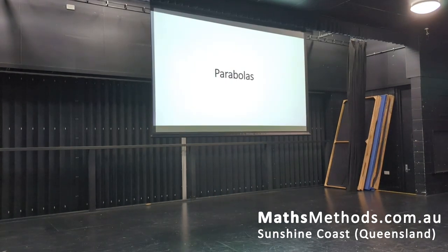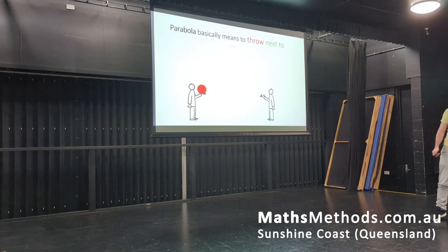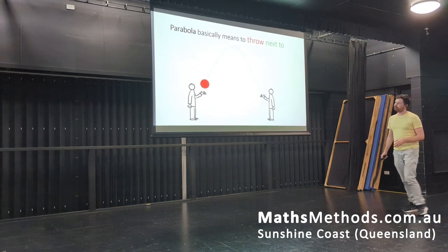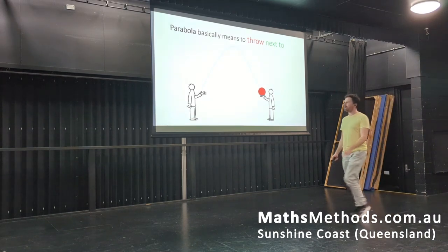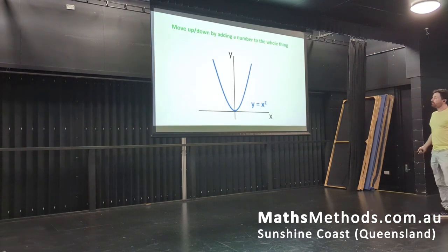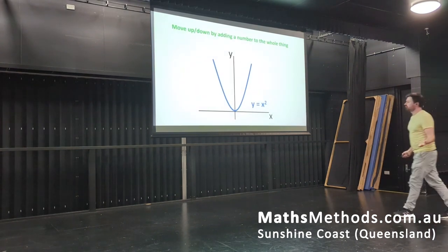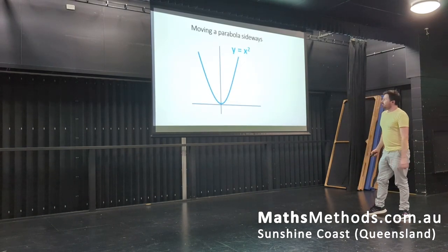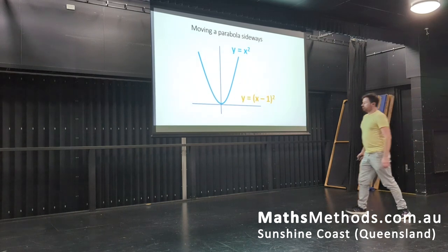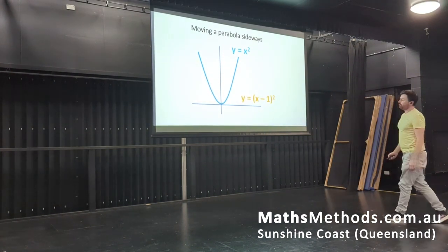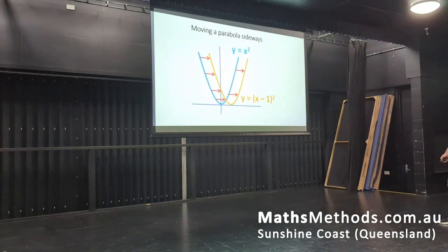We're going to start super basic — we're going to start with parabolas. The word parabola basically means 'to throw next to.' It comes from a couple of Greek words: para, which means next to, and bola, which means to throw. If we're moving around parabolas, we add a number to it and that's going to move it up. And if we subtract a number just to the x, that's going to move it sideways — usually the opposite direction than you'd expect.